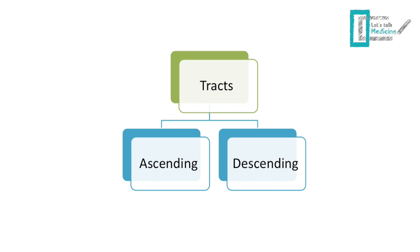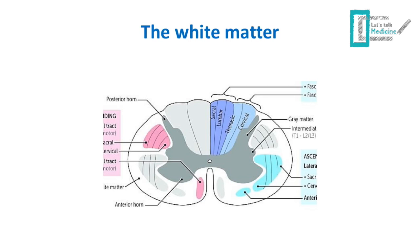Descending tracts do the opposite — the signal goes from your motor cortex through neurons down to your limb muscles, allowing you to move and, for example, write with a pen. This is a cross section of the spinal cord. The gray matter comprises the posterior horn, which is sensory, the anterior horn, which is motor, and the intermediate horn on both sides, which is autonomic.